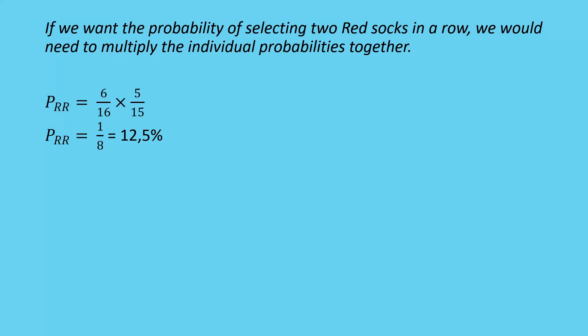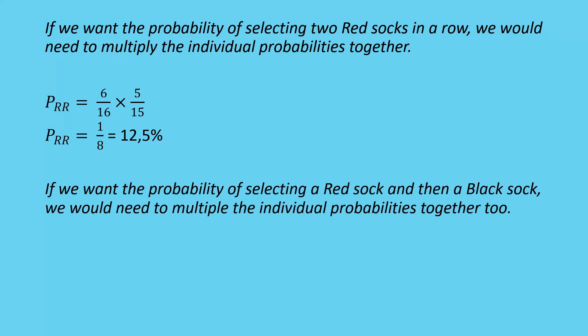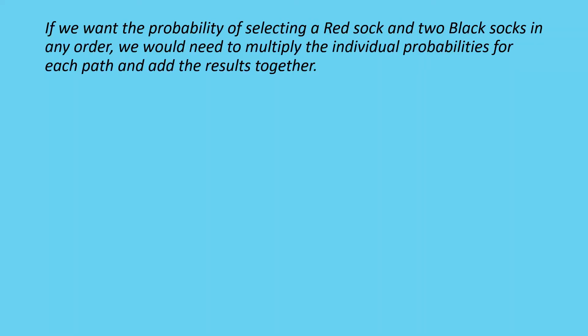Without replacement, the probability of two red socks in a row is 6/16 × 5/15, giving a one in eight chance — 12.5%. Previously with replacement, it was about 14%, but now it's lower because there are fewer red socks on the second draw. For a red sock then a black sock: 6/16 × 10/15, giving one quarter or 25% — more likely because there are more black socks in the drawer.